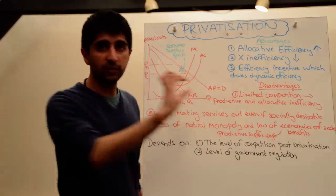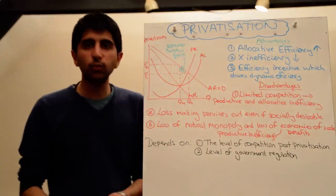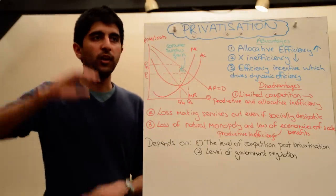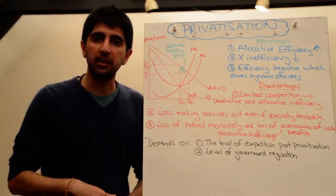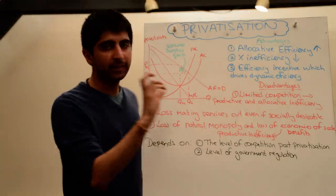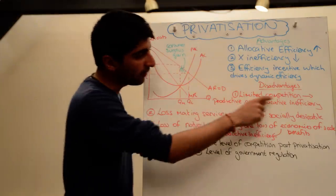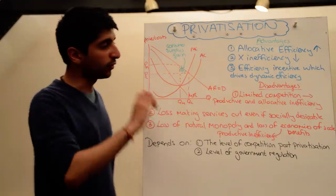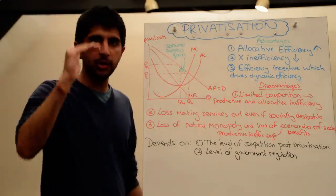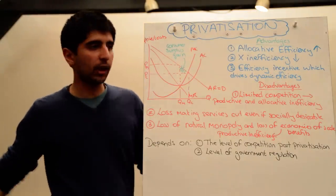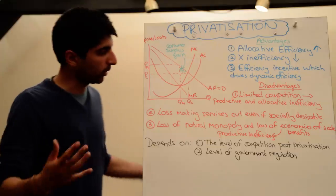And there might be allocative inefficiency too. If there is limited competition, why do firms need to strive to hit the highest quality? They don't. So there might be allocative inefficiency as well. The level of competition is very important. There is no guarantee that competition will be high. There is no guarantee that firms will now flock to enter this industry.